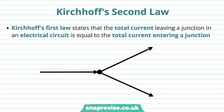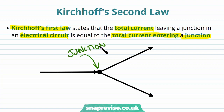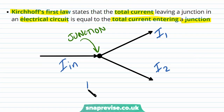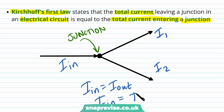We've previously come across Kirchhoff's first law, which is to do with the total current in a circuit. Kirchhoff's first law states that the total current leaving a junction in an electrical circuit is equal to the total current entering a junction. A junction is where one wire or path splits into more than one path. So I_in is equal to the sum of I_out, which is I1 plus I2.